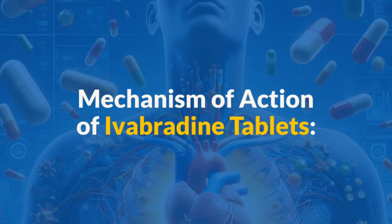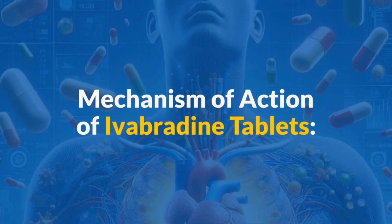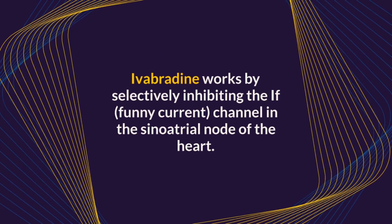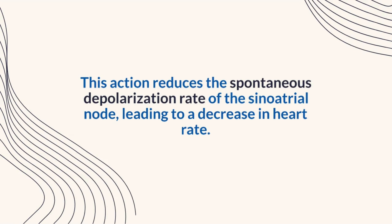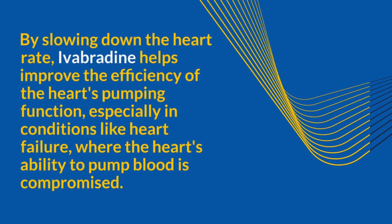Next, the mechanism of action of ibaprodine tablets. Ibaprodine works by selectively inhibiting the if channel in the sinoatrial node of the heart. This action reduces the spontaneous depolarization rate of the sinoatrial node, leading to a decrease in heart rate. By slowing down the heart rate, ibaprodine helps improve the efficiency of the heart's pumping function, especially in conditions like heart failure, where the heart's ability to pump blood is compromised.